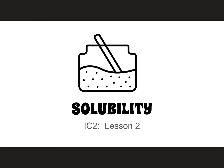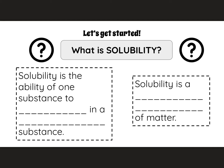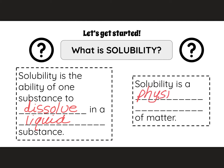Hello, scientists, and welcome to the video on solubility. So let's get started. What is solubility? Solubility is the ability of one substance to dissolve into a liquid substance. Solubility is a physical property of matter. This means that we can use it to help identify substances.